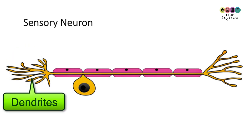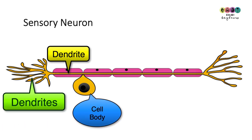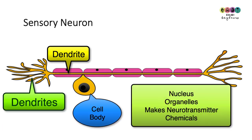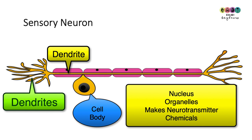From the dendrites, it passes along one main dendrite towards the cell body. The cell body is the part of the sensory neuron that contains the nucleus of this cell. It also contains the organelles, and it's where these special neurotransmitter chemicals — which you'll learn about in the next video — are produced.